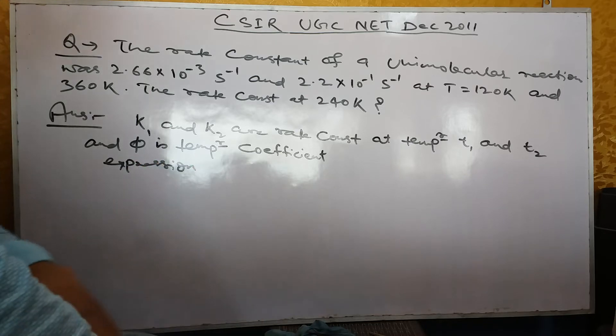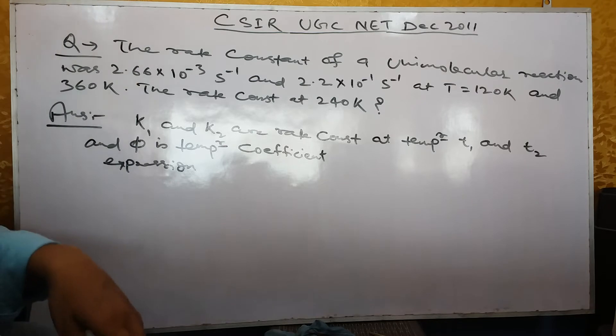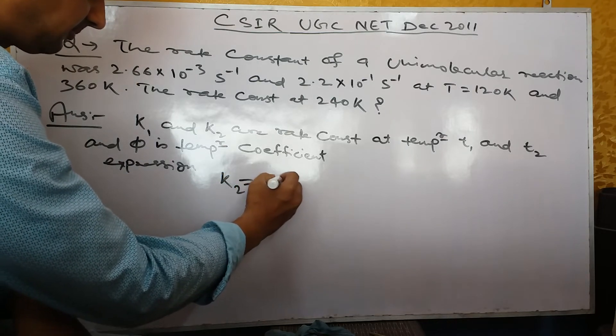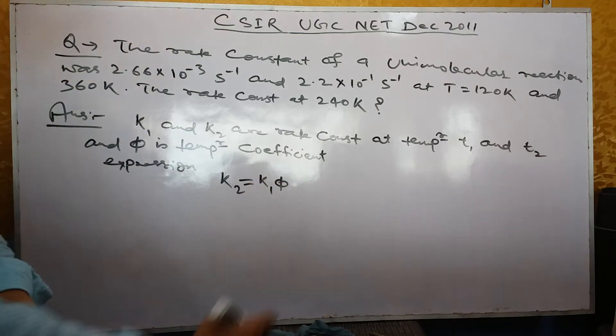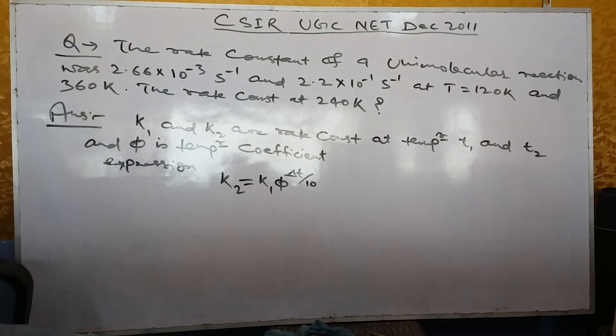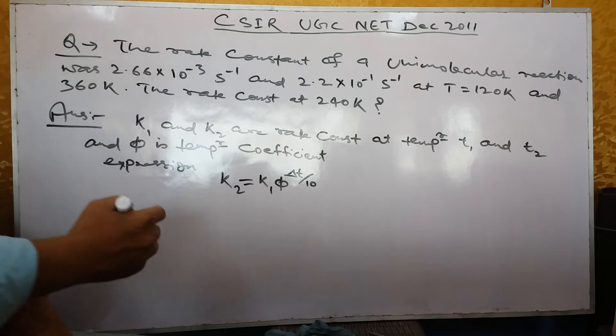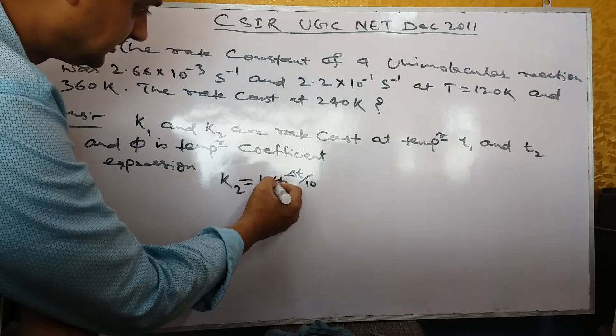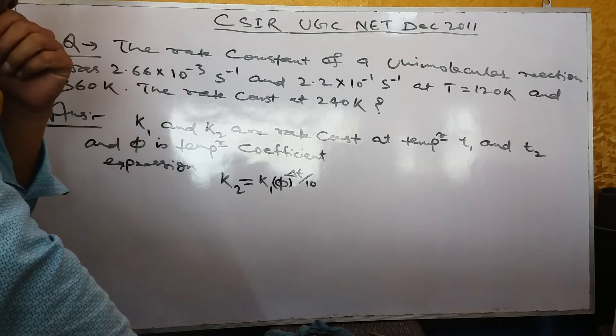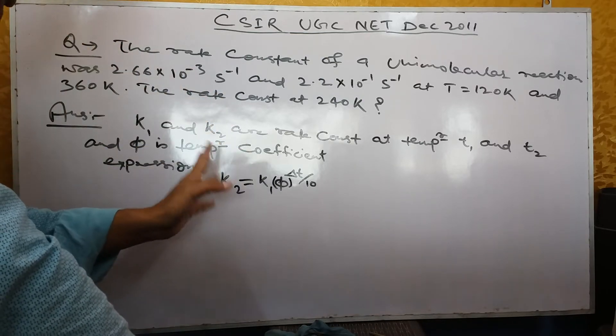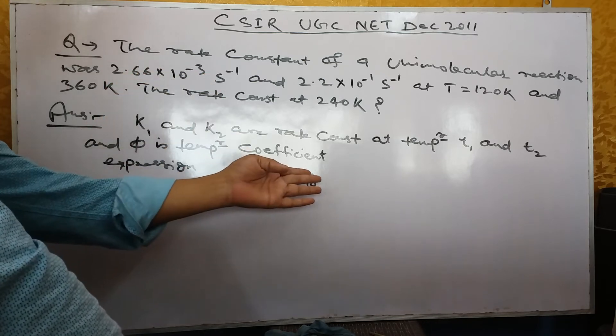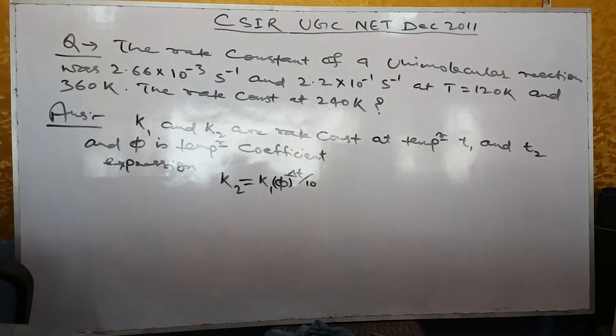With the help of this expression, we will solve the problem because K1 and K2 values are given, and delta T is T2 minus T1. You can find the φ value.